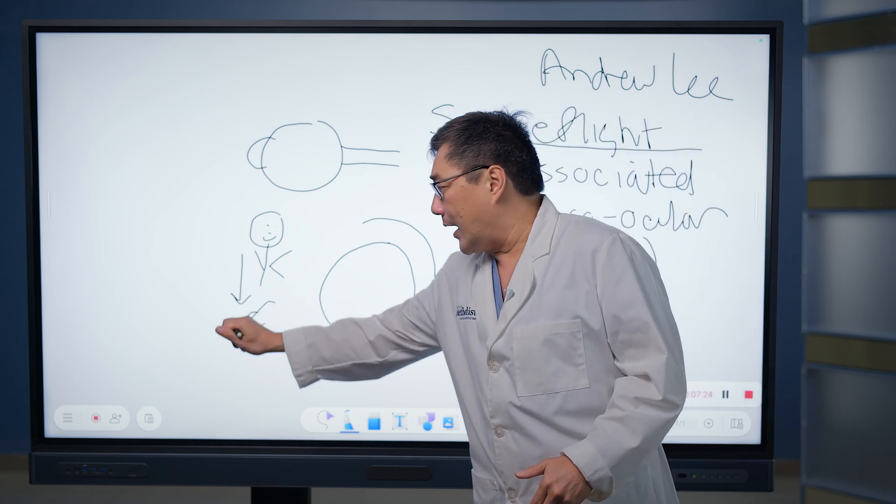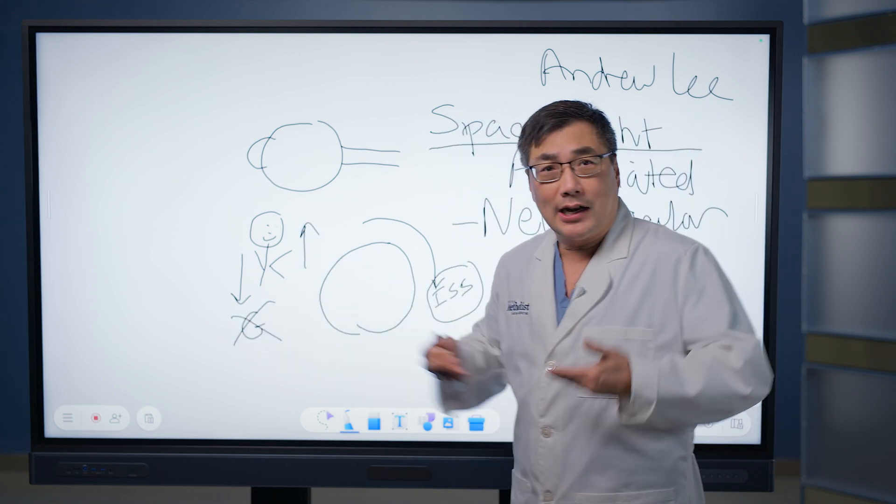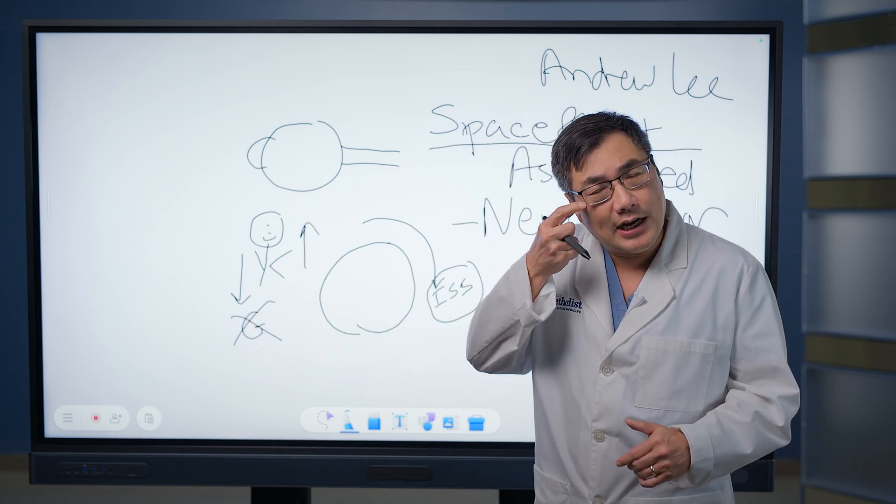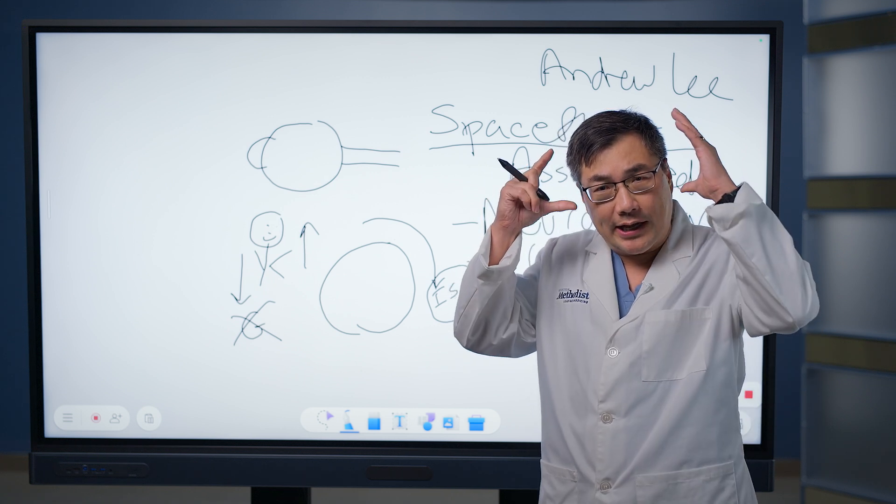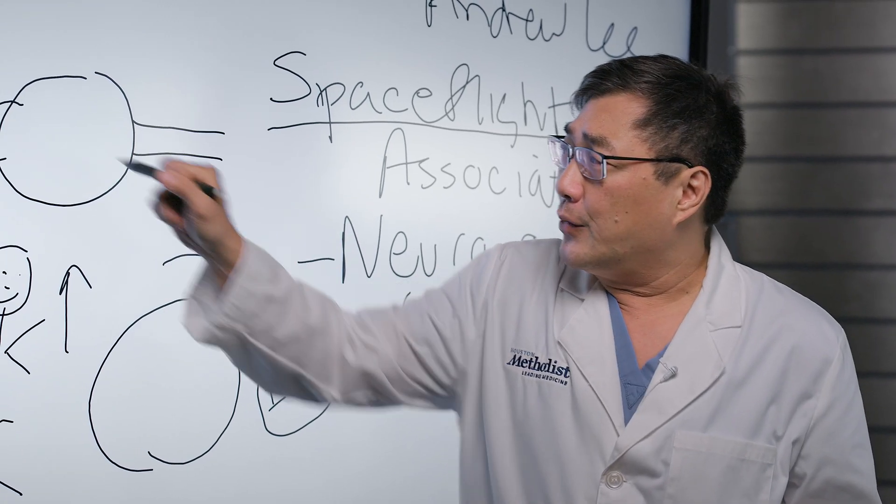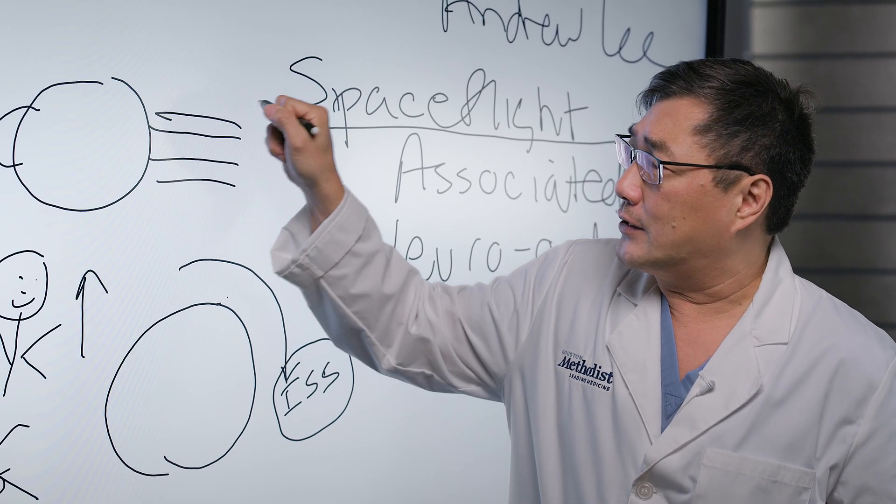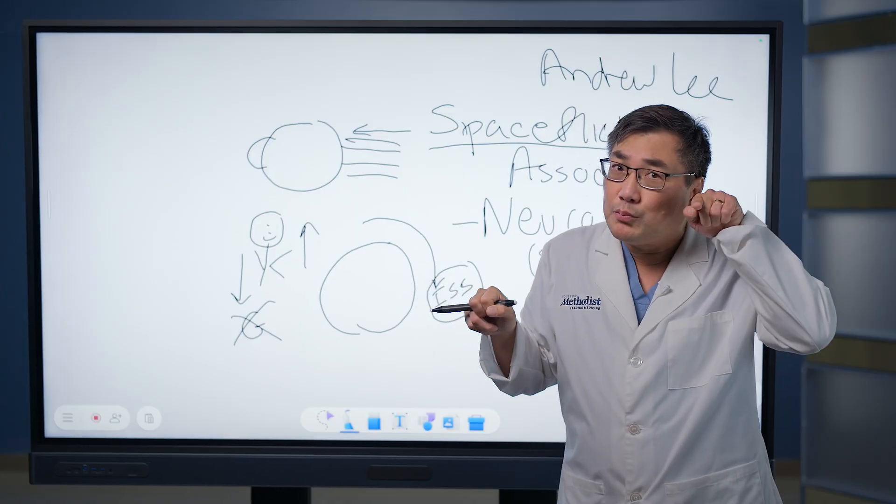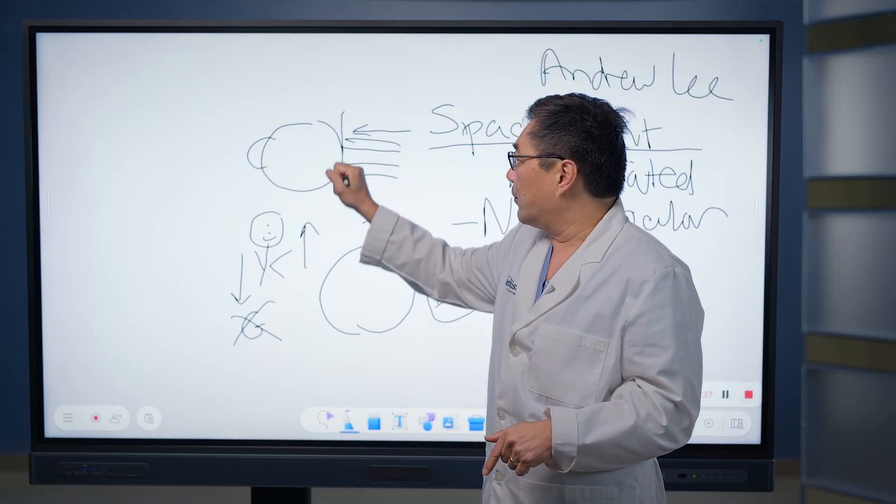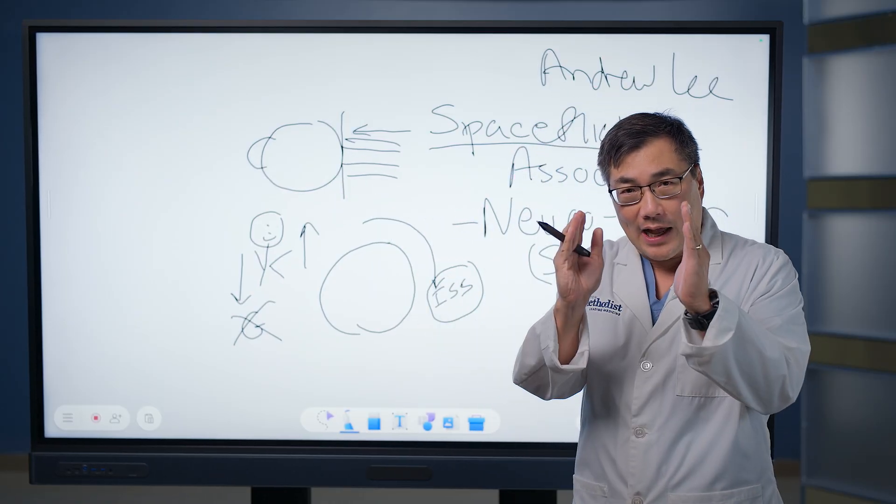However, when you don't have gravity, the fluid gets stuck upstairs. It gets stuck in the eye socket and in your head. For the eye, what that means is the fluid that's in your head is pushing forward and causing a flattening of the eye.